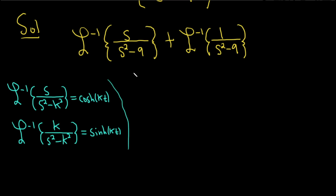Okay, so here we can apply the formula right away for this one. So k is 3 here, right, because 9 is 3 squared. This will be cosh of 3t.